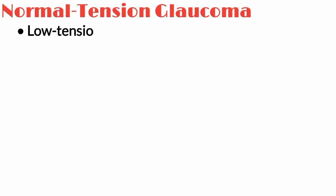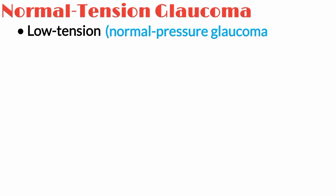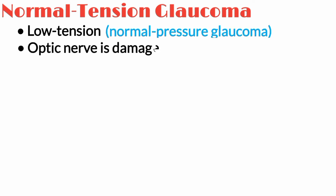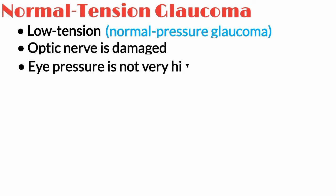Normal tension glaucoma, also called low tension or normal pressure glaucoma, is a condition where the optic nerve is damaged even though the eye pressure is not very high.